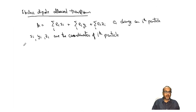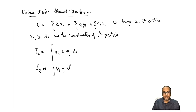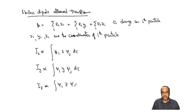So the intensity in x is proportional to the integral of psi_i, x, psi_j, d-tau. Similarly, intensity along y will be proportional to the integral of psi_i, y, psi_j, d-tau. And intensity along z will be proportional to the integral of psi_i, z, psi_j, d-tau.